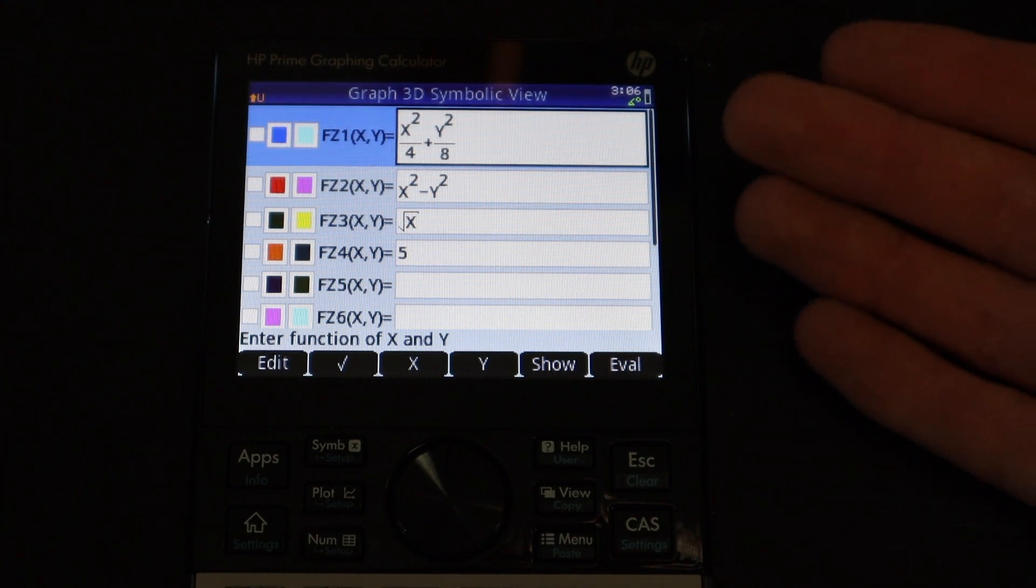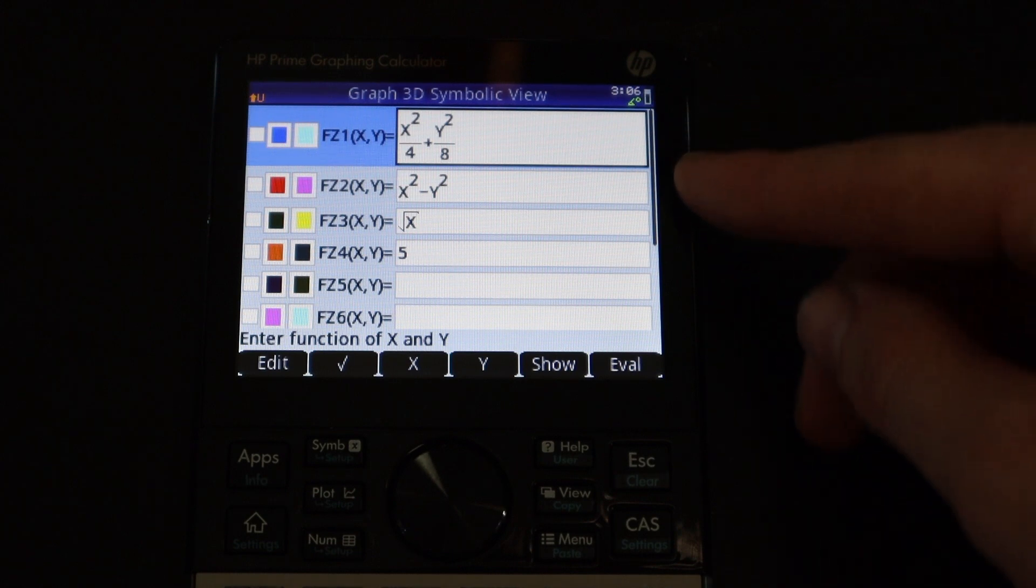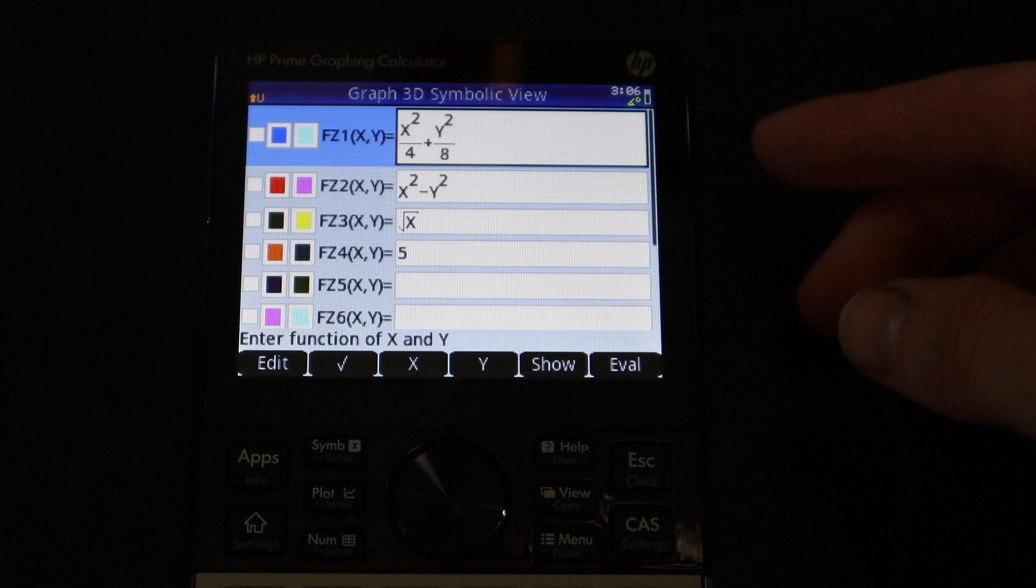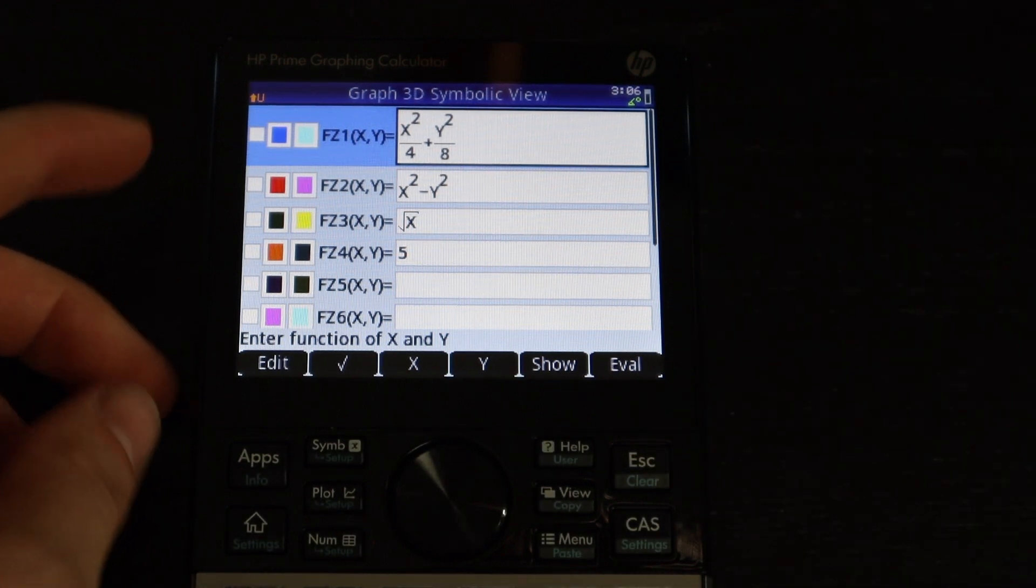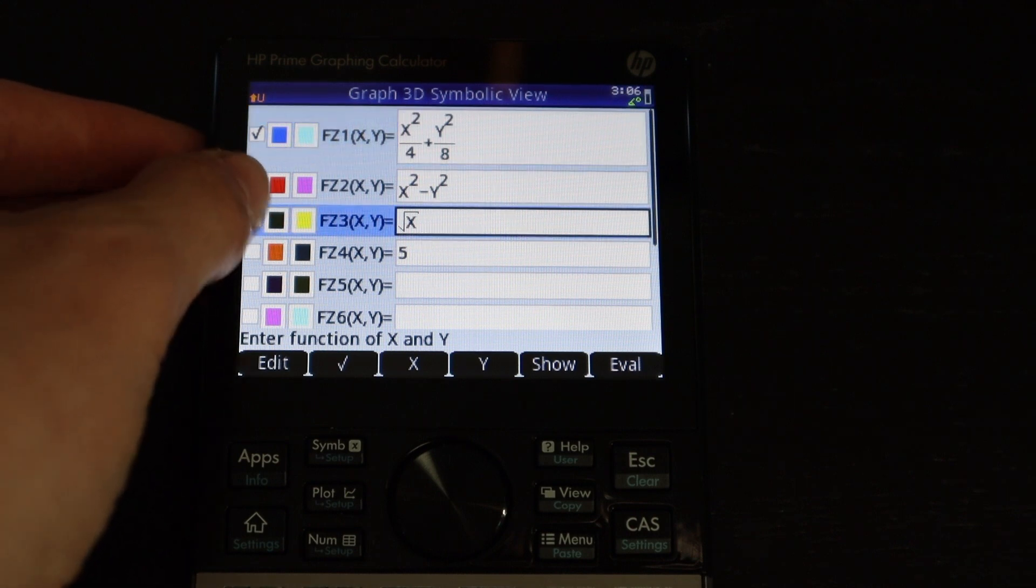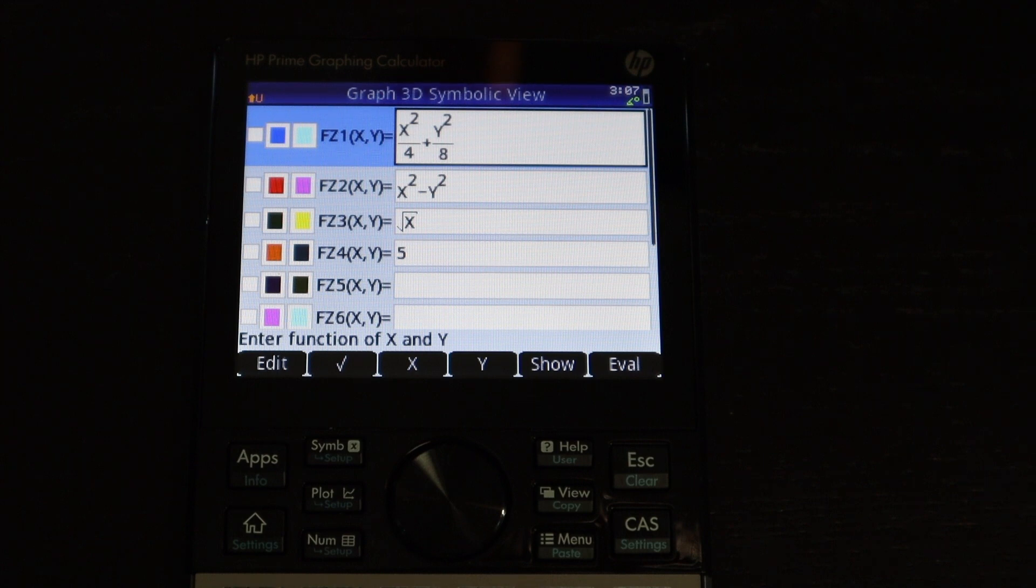This is just like any other graphing app that you'd see on a calculator. You can just enter the functions that you want to graph, and you can enter multiple functions at a time, and you can have them all in the same graph, or you can use these little checkboxes right here to toggle the functions on and off.